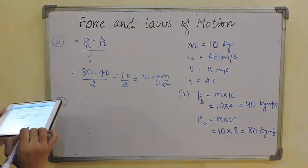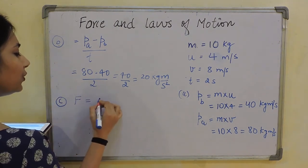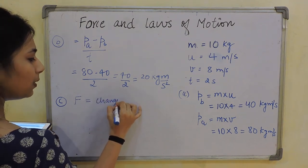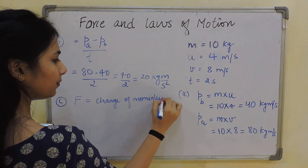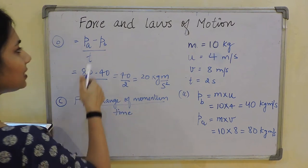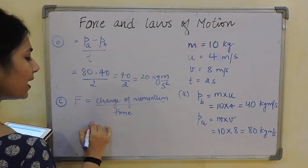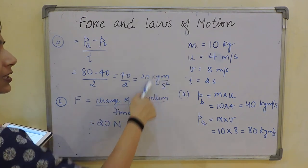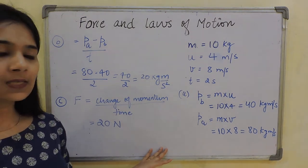For the last part, force is the rate of change of momentum — change in momentum per unit time. From part B you can see this is change in momentum divided by T, which is also the unit of force. So the answer is 20 Newton.